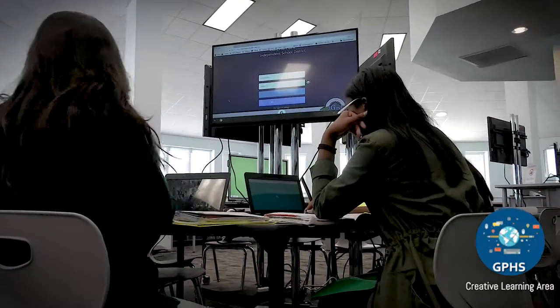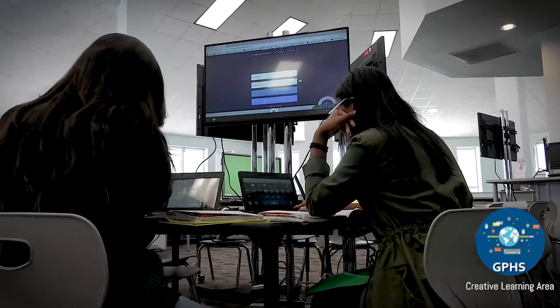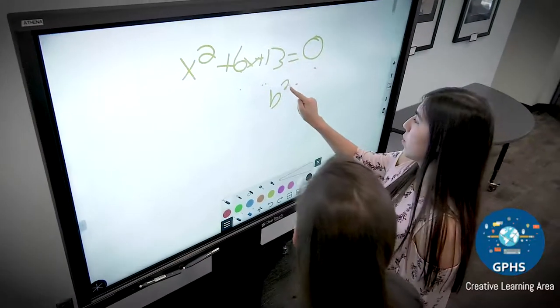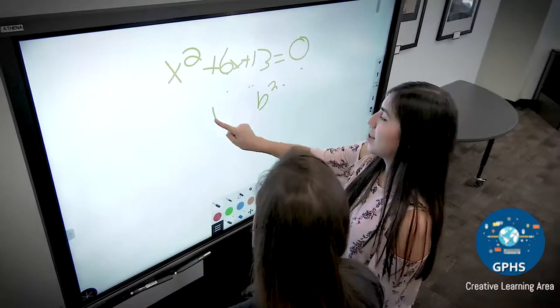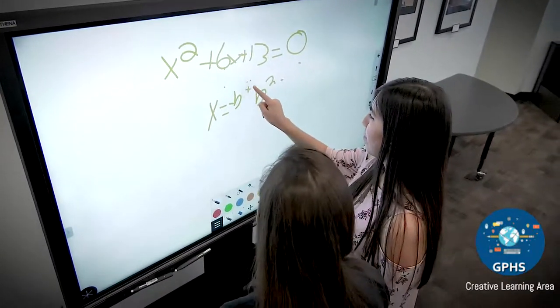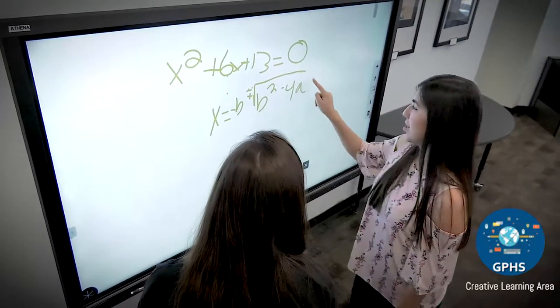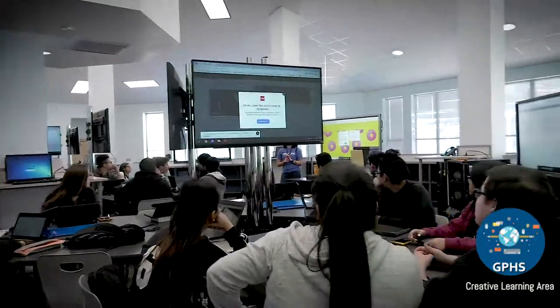We have a group learning area on the other side of the room if a student needs to go over and work in a group. Those are mobile so they can be moved anywhere in that space. We also have pods where students can cast up to a screen from their Chromebooks or their mobile devices.